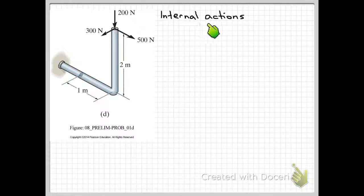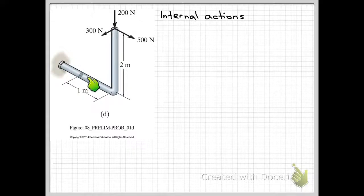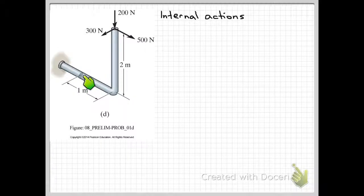Working out these internal actions at this location enables us to calculate the stresses at this location. So using our familiar equations, such as stress equals My upon I for bending, shear stress equals VQ upon It, we can make use of those internal actions in order to make use of those stress analysis equations. But in this problem, I'll just go through the process of determining the internal actions.